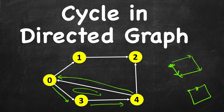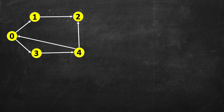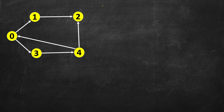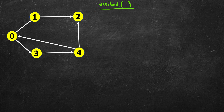Let's see how to find a cycle in the directed case. We will do a DFS to find the cycle. Instead of a simple visited array that stores boolean values (0 or 1) to avoid revisiting nodes, we will modify it slightly.